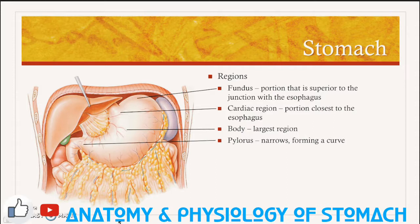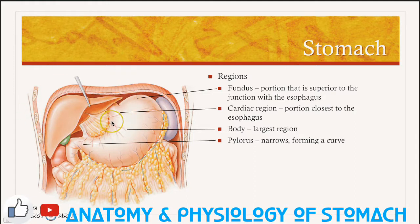The fundus is the portion that is superior to the junction with the esophagus, and you can see how it curves up towards the diaphragm right here. The cardiac region is the region closest to the esophagus, this little area here.